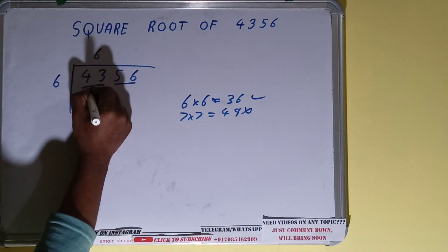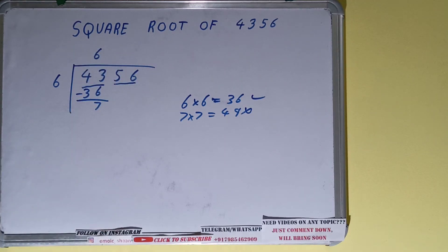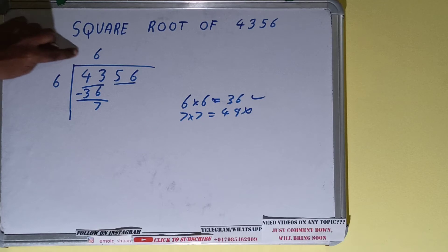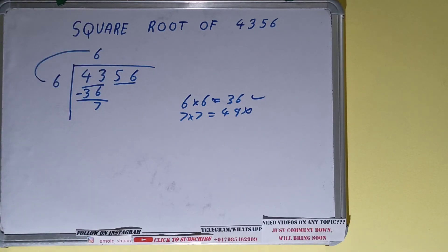36, subtract, 7 left. Okay, now again, whatever is your divisor, add it with what you multiplied with. So you did 6 into 6, so add both. 6 plus 6 will be 12.